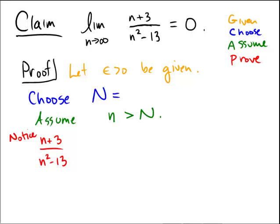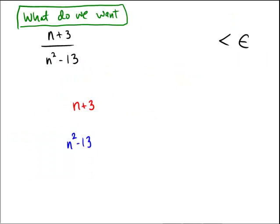Now the problem is we have to show that this object is less than epsilon, this expression over here, because this is n plus 3 over n squared minus 13, minus 0 technically, right? Because that's the limiting value supposedly.